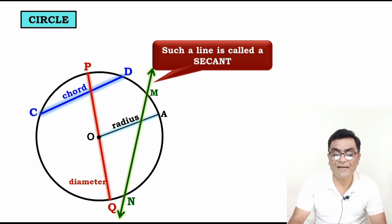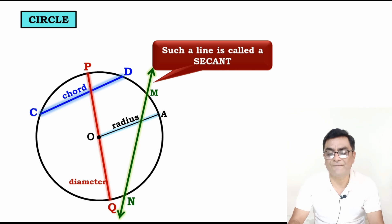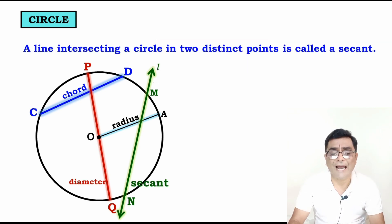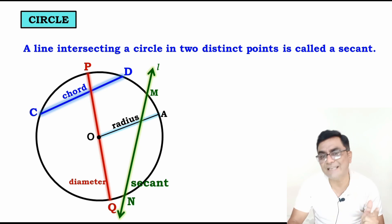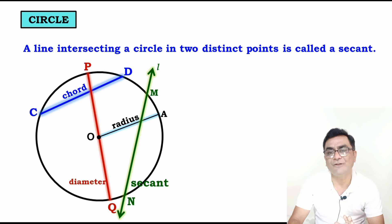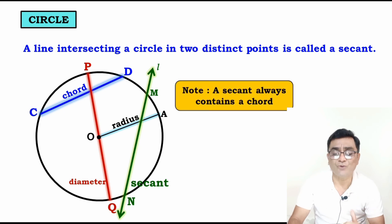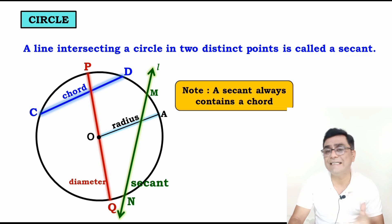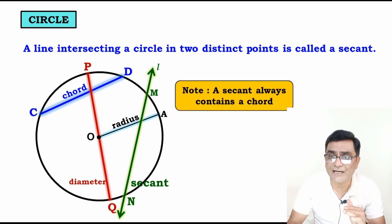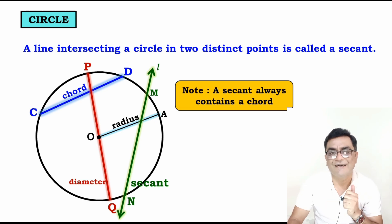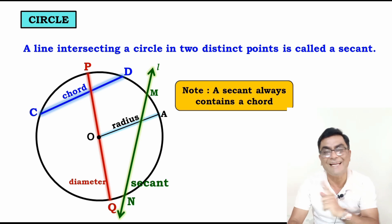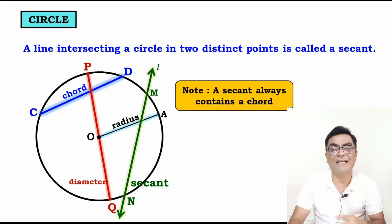A secant always contains a chord. Note carefully: every secant intersects the circle, and the chord MN is a part of that secant. So MN is the chord and L is the secant.